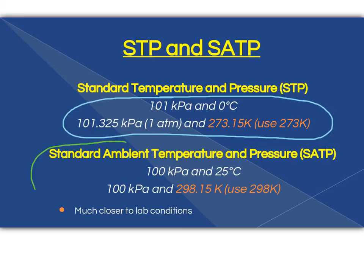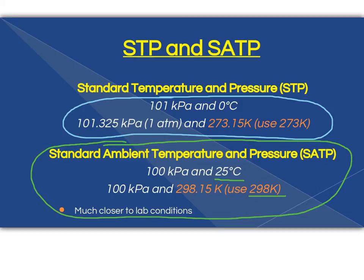SATP is standard ambient temperature and pressure. And standard ambient temperature and pressure is 25 degrees Celsius, which is much closer to lab conditions. So when we're using SATP, we're using 100 kPa and 25 degrees Celsius, or 298 Kelvin. Again, these are conditions that you need to memorize, and they will be referred to a lot throughout the questions that we're doing.